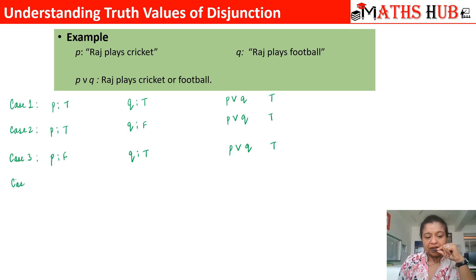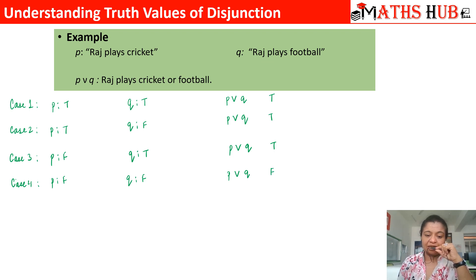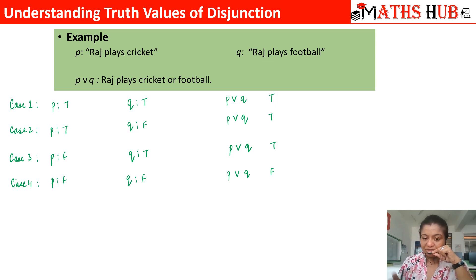Case number 4: Raj is neither playing cricket nor football. Both statements are false. If he doesn't play cricket and he doesn't play football, we are not comfortable with it — he needs to play one of the games. So this is automatically going to be a false statement. I hope this example is clearing the truth values of the disjunction operator that we did in the last slide.